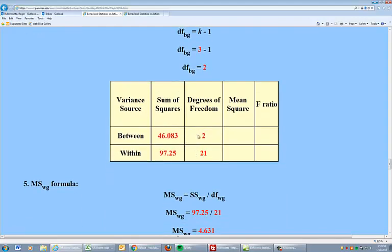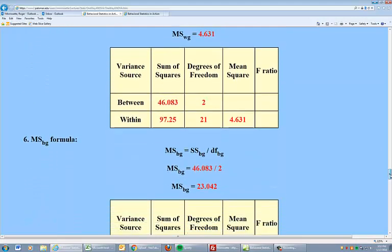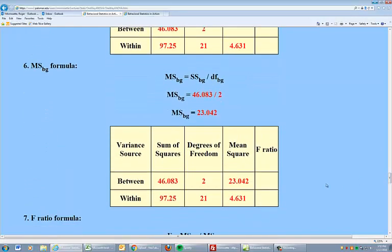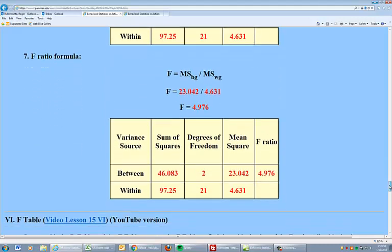Now it's just this divided by this and this divided by this, right? That's how we get mean squares. This divided by this. And sum of squares between groups divided by degrees of freedom is the mean squares. And then there's our ratio, 23042 over 4.631. And our F-ratio turns out to be 4.976. That's how you calculate a one-way ANOVA.